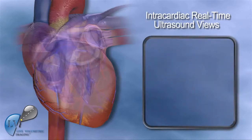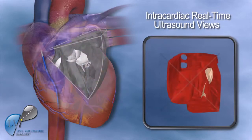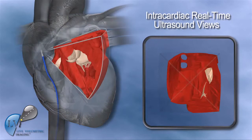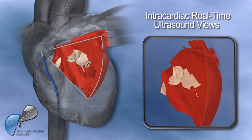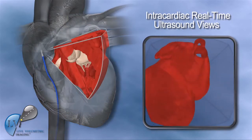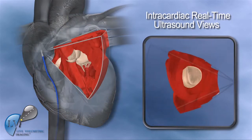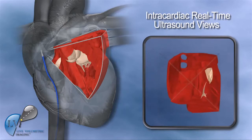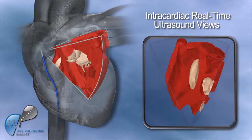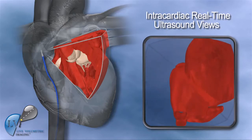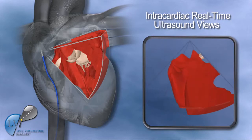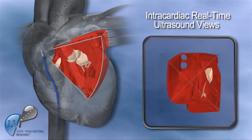The LVI catheter is inserted through the femoral vein and inferior vena cava into the right atrium, and provides a volumetric view into the left atrium and ventricle. This volumetric view of the beating heart can be rotated using a 3D ultrasound imaging system to display any arbitrary orientation within or around the volume, without any repositioning of the imaging catheter.